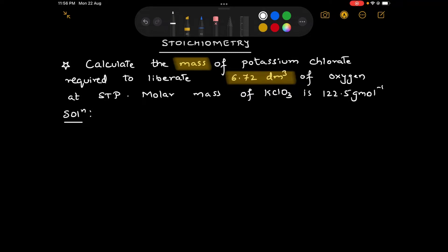The molar mass of KClO3 is provided in the question, 122.5 gram mole inverse. So what we have to find out is the mass of potassium chlorate which is liberating 6.72 decimeter cube of oxygen gas.